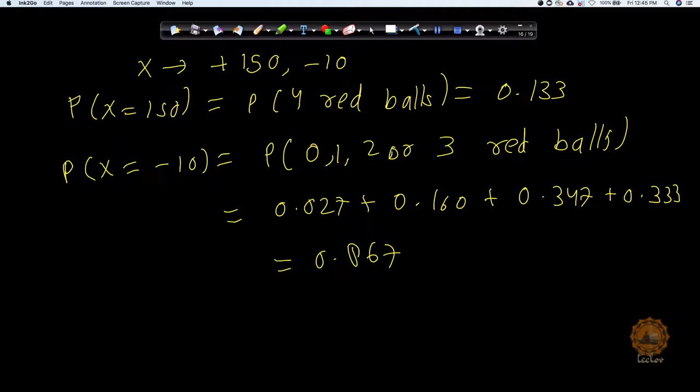So what I'm gonna do, I'm gonna take probability that my X is 150. This is only gonna happen if the probability he's going to get all 4 red balls, which is 0.133.